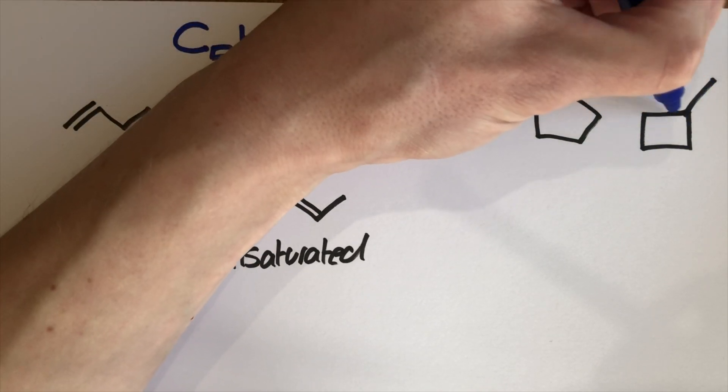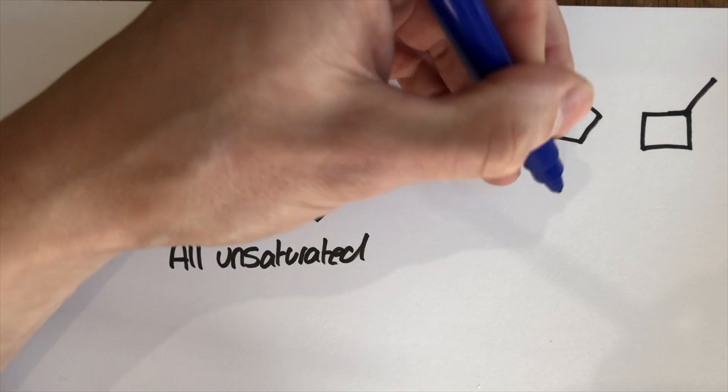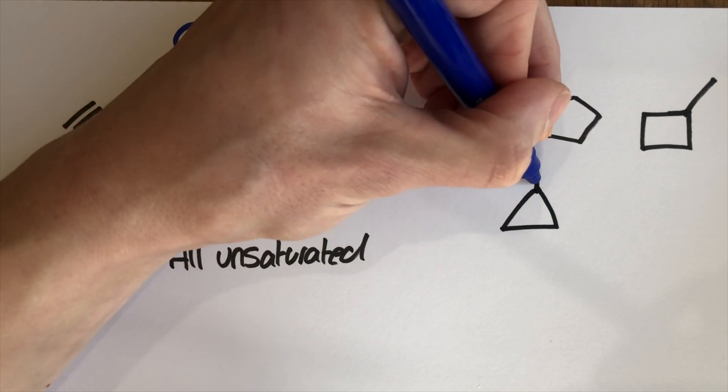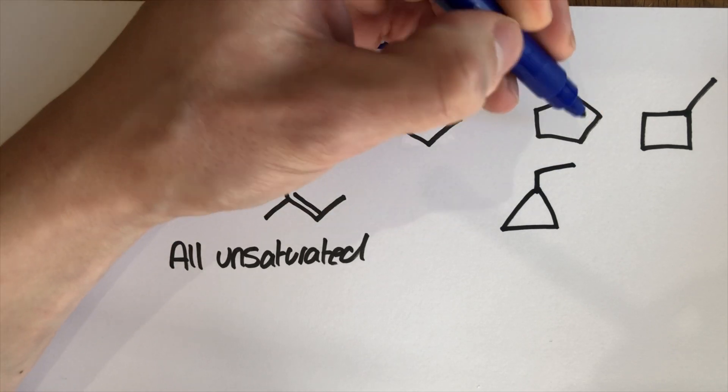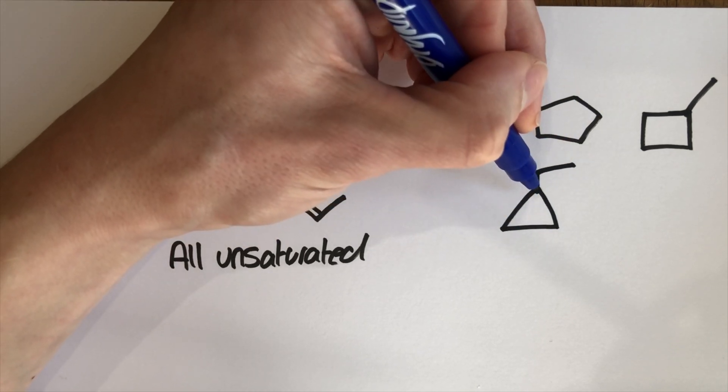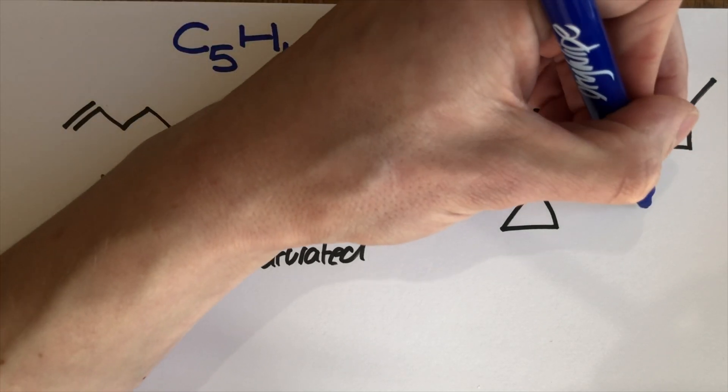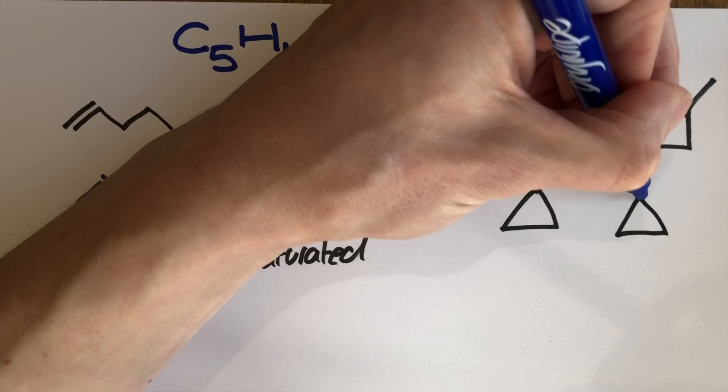And then I can split this longer branch up into some other sections just here so I can put two methyls on so that would be 1,1-dimethylcyclopropane.